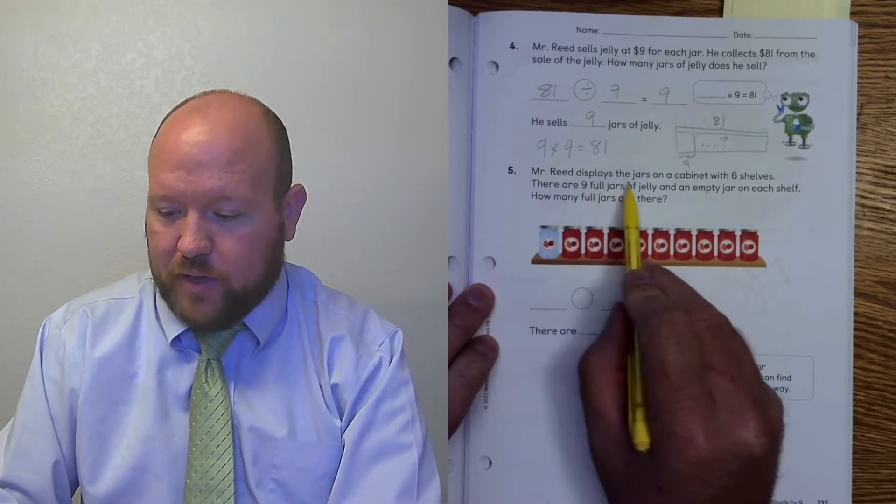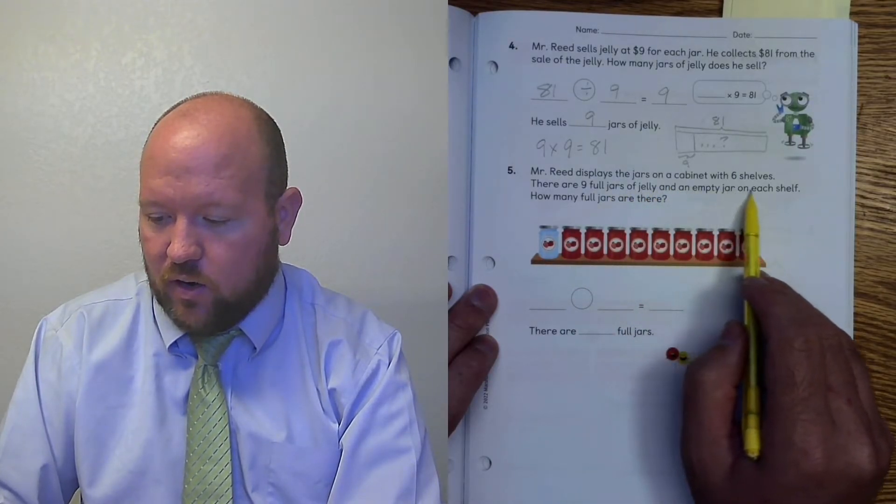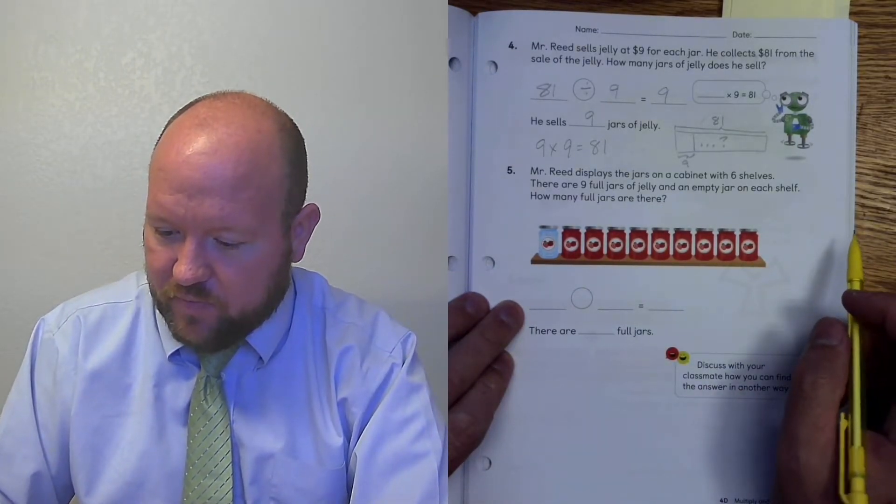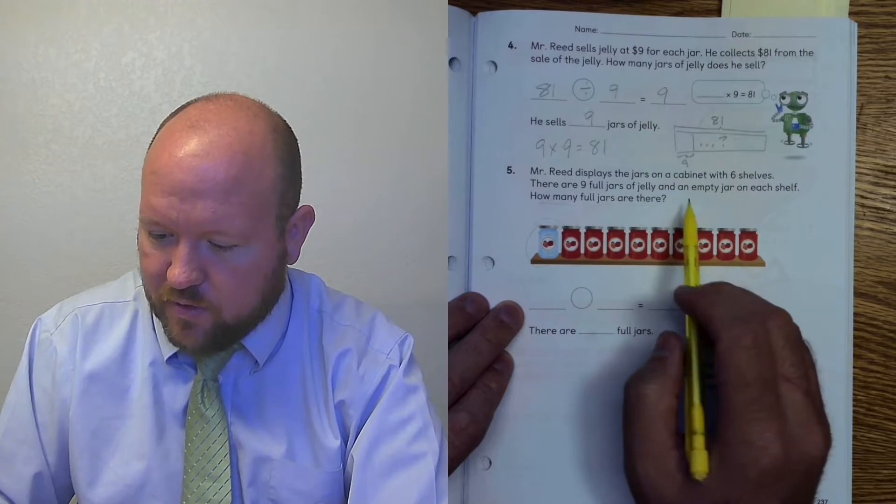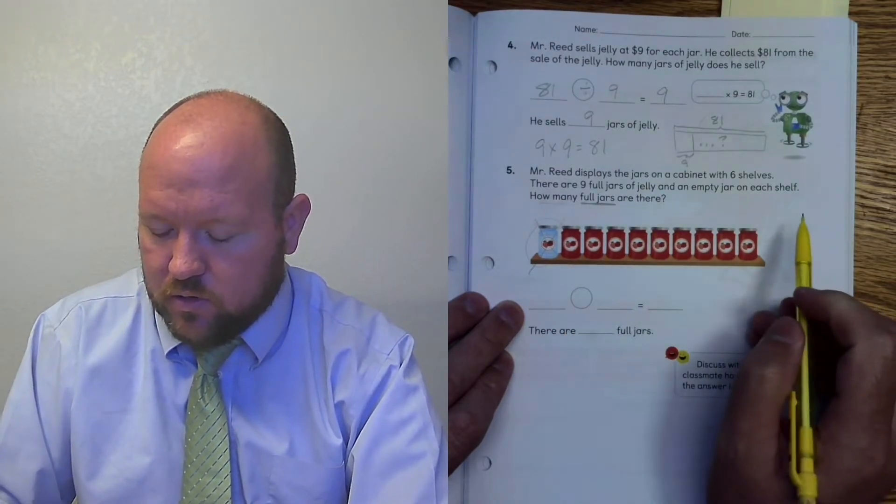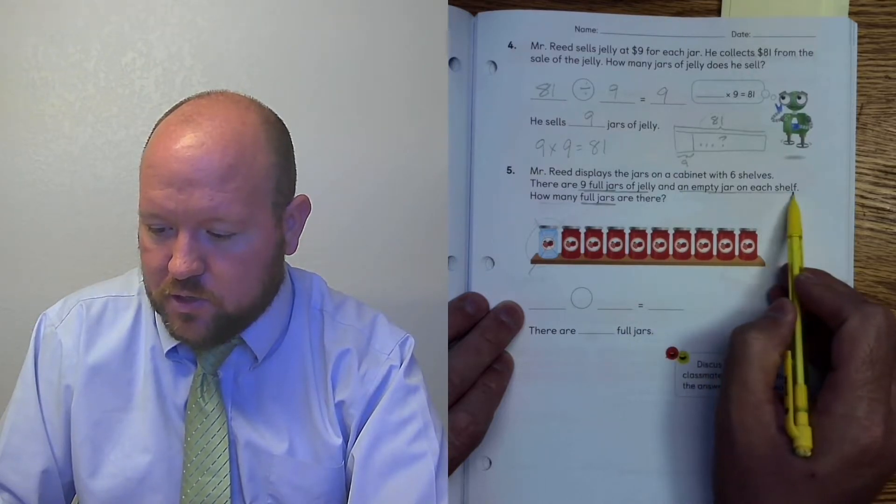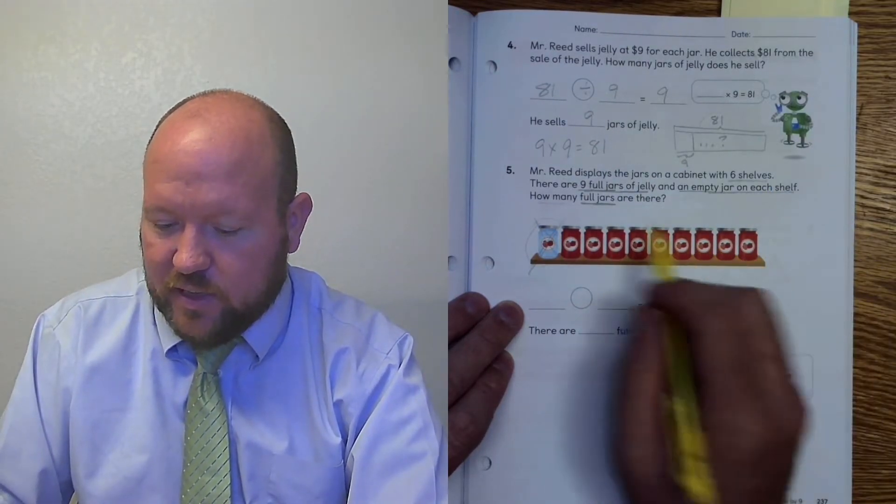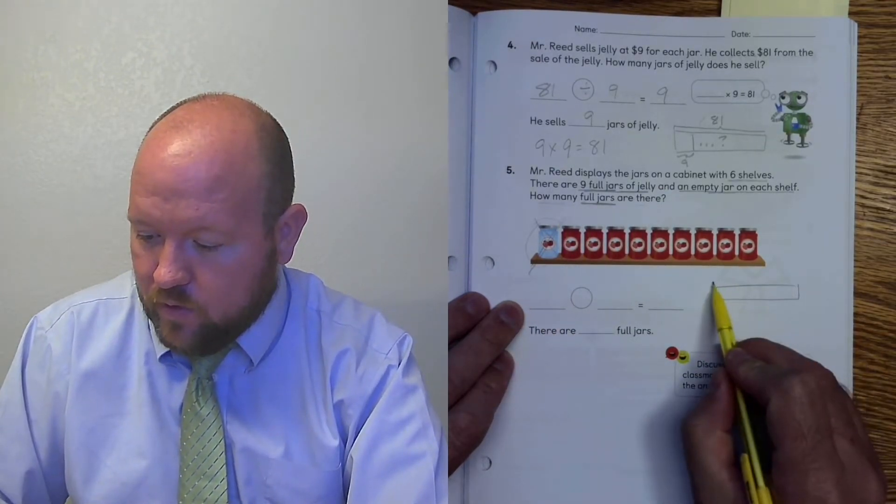Mr. Reed displays the jars on a cabinet with 6 shelves. There are 9 full jars of jelly and an empty jar on each shelf. How many full jars are there? So here they've given us some extra information. We really don't need to worry about that one. Because all we care about are full jars. So there are 9 full jars of jelly and an empty jar on each shelf. And there are 6 shelves. But it doesn't ask us how many. So here they're trying to trip us up. So that's why it's important to read it so we get that. So how many full jars are there?